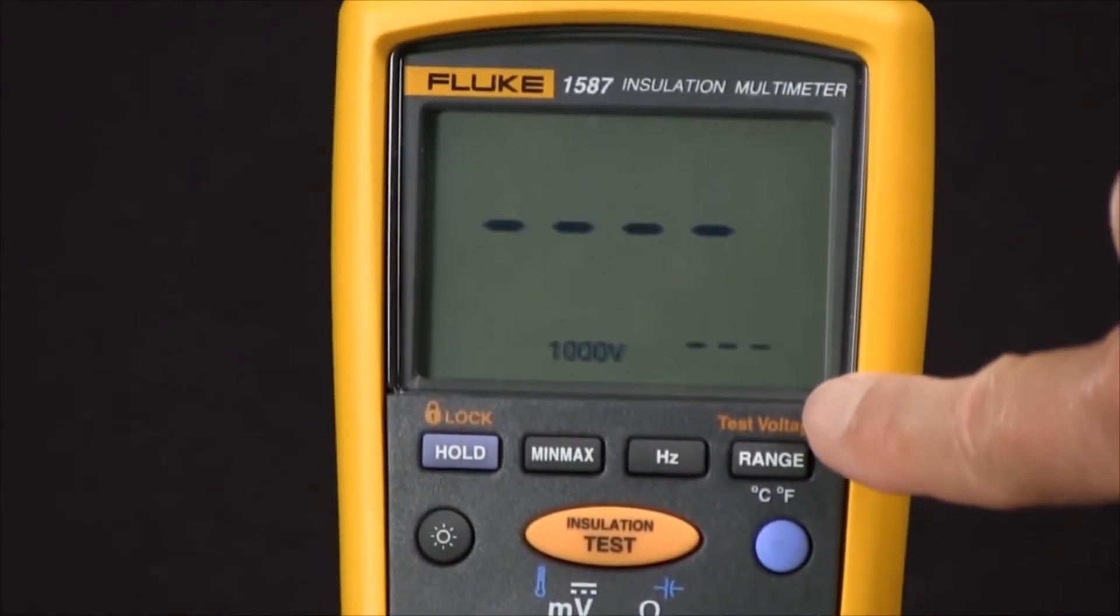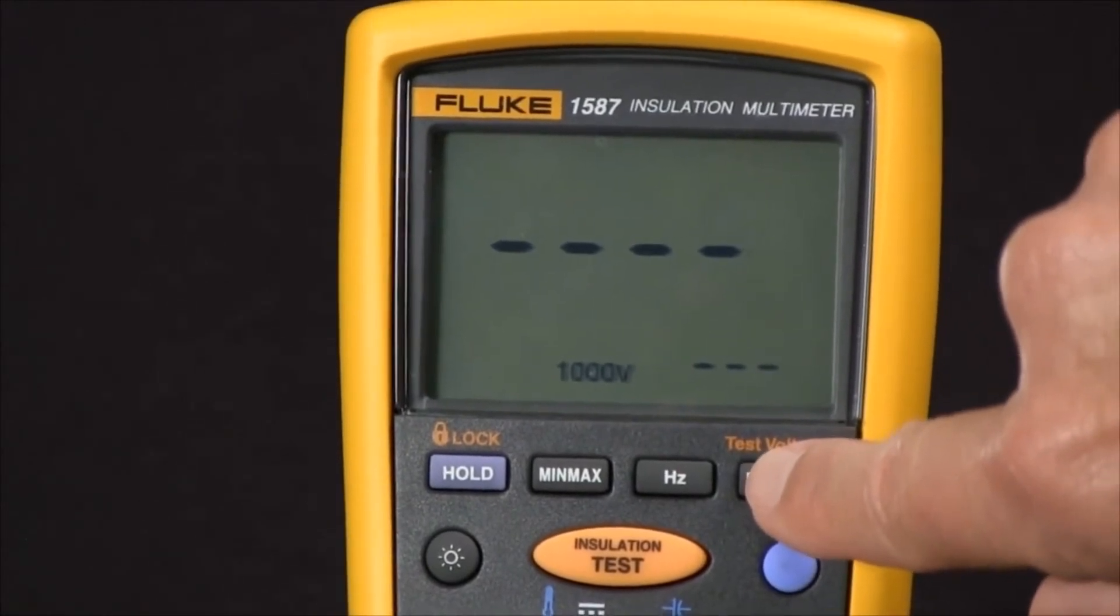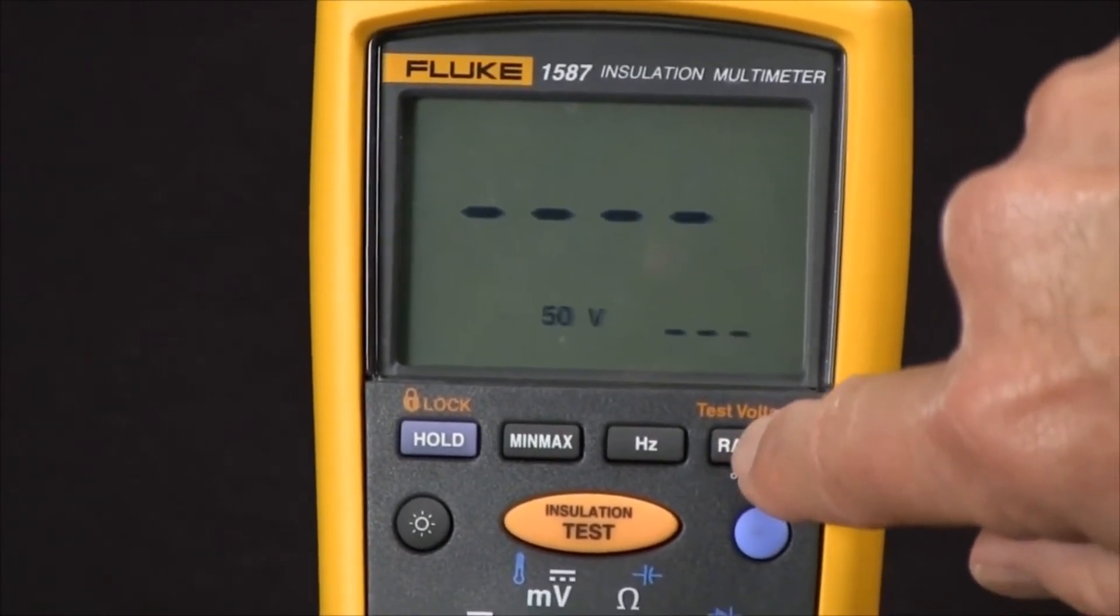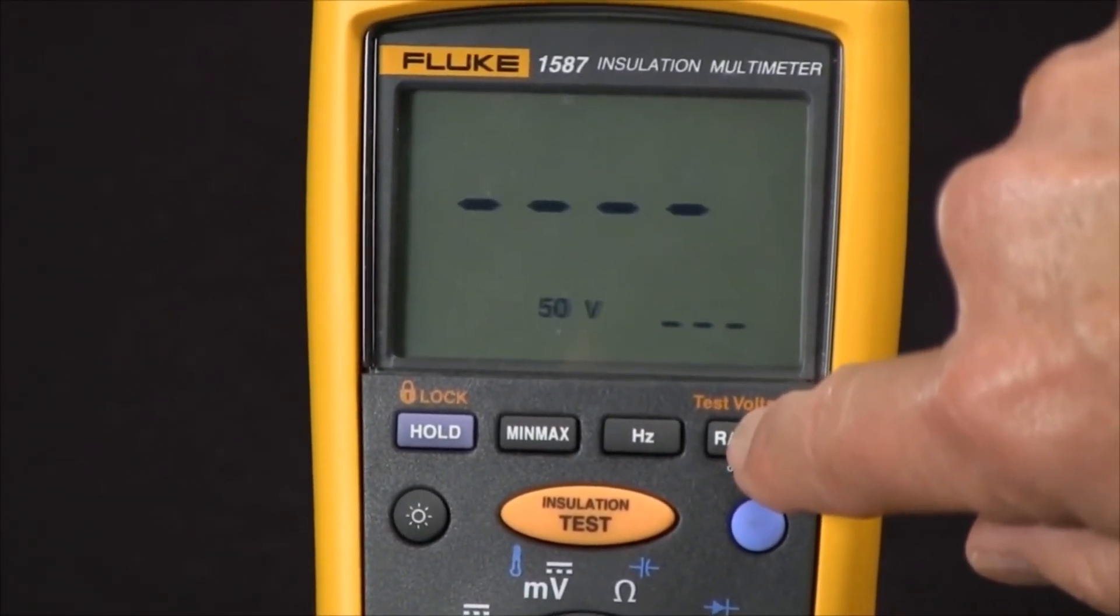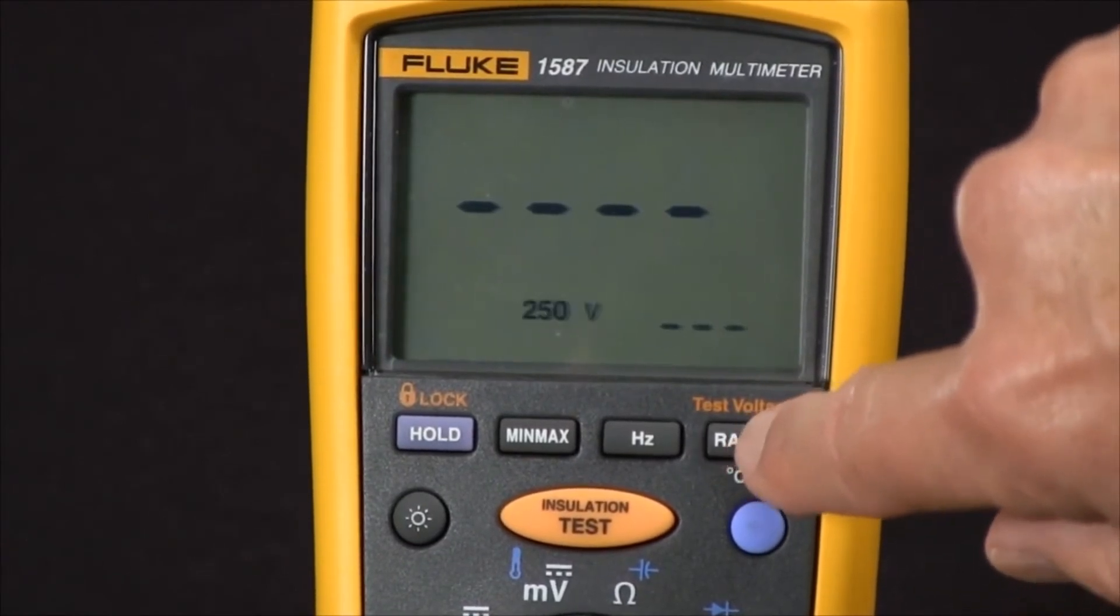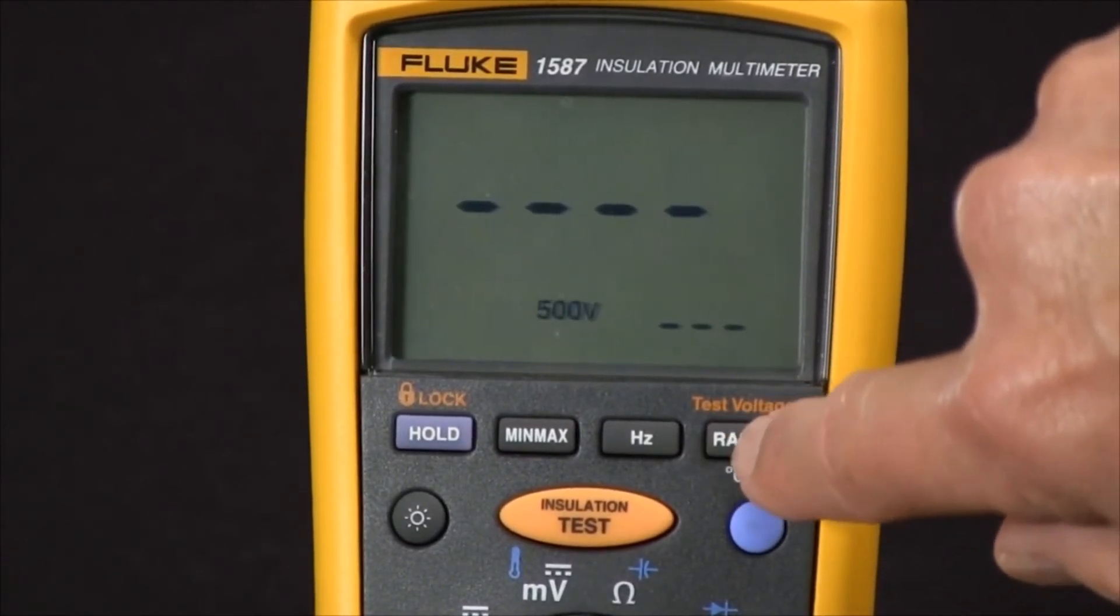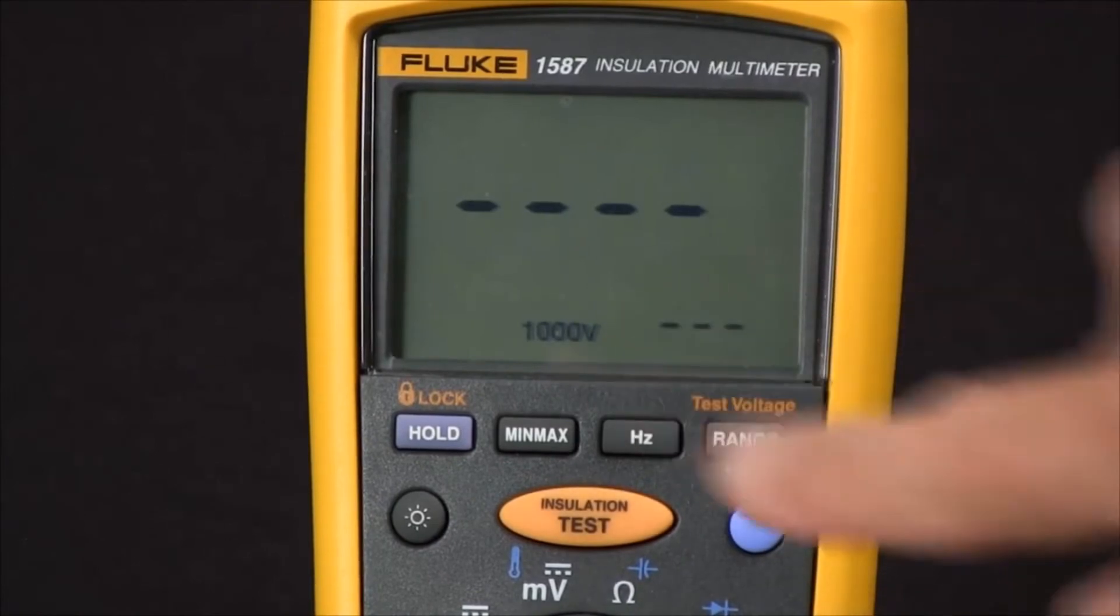And at this point we can select the test voltage by pushing the test voltage button. Every time we push it we rotate through 50 volts, 100 volts, 250 volts, 500 volts, and 1,000. I'm going to use 1,000 volts.